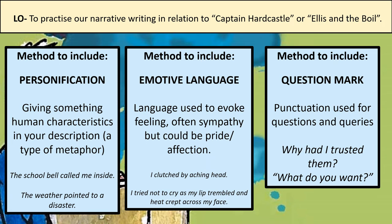I'd also like you to try and use some emotive language — language used to evoke feelings, often sympathy, but also pride or affection. For example: 'I clutched my aching head. I tried not to cry as my lip trembled and heat crept across my face.' Maybe you're going to make the reader feel really sympathetic towards your protagonist because they've been treated so unfairly, or by using emotive language make your reader feel angry about the way your antagonist is behaving. Think about how you're going to make your reader feel emotions for the characters. And last but not least, try to include a question mark — used for questions and queries. For example: 'Why had I trusted them?' — a rhetorical question that doesn't need an answer. Or in dialogue: 'What do you want?' — that sounds really blunt and abrupt. Maybe your antagonist could say that to your protagonist.